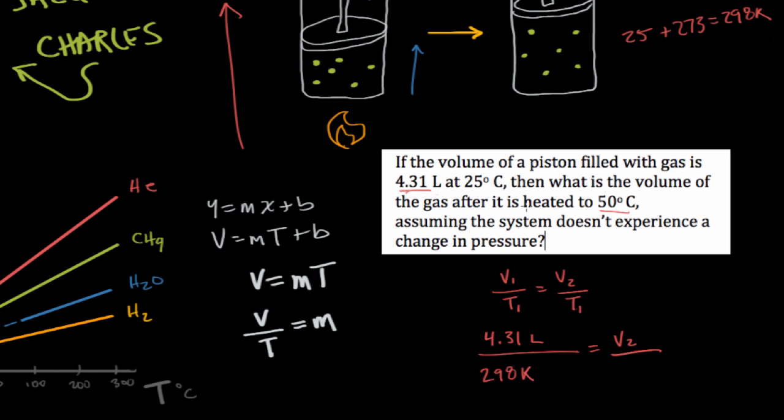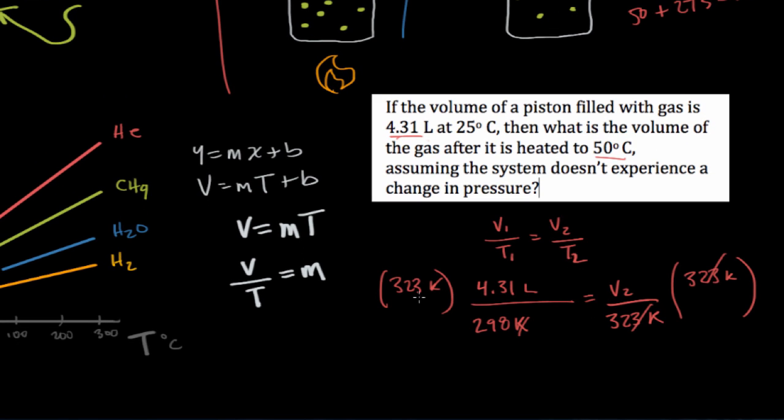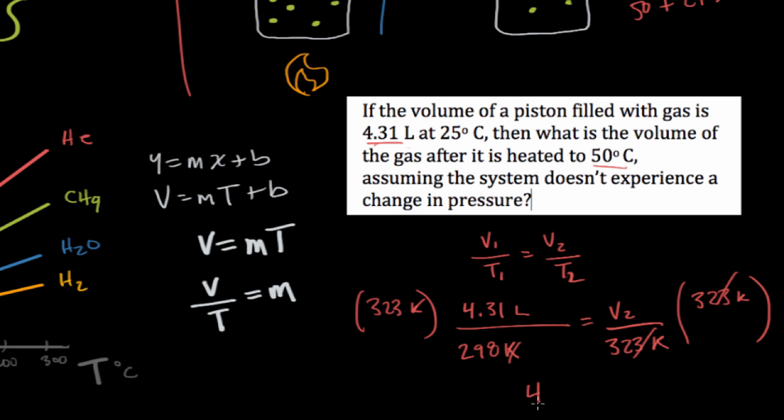Our final temperature is 50 degrees Celsius, and we need to convert that to Kelvin. 50 plus 273 is going to give us 323 Kelvin. To continue solving this, we need to multiply both sides by 323 Kelvin to isolate our final volume. That's going to allow us to cancel out the value on this side and cancel out our units of Kelvin on this side. So we have 323 times 4.31 divided by 298, retaining our unit of liters. That's going to give us a final volume of 4.67 liters.